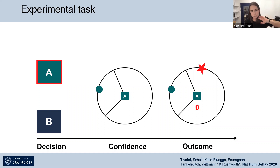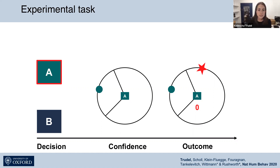We set up a payoff scheme that incentivizes participants to choose predictors they believe are accurate and certain about. This combination of beliefs allows participants to narrow down the confidence interval and maximize points across the task. Because there's quite a lot of information, let's go through an example trial to show exactly what participants would see.